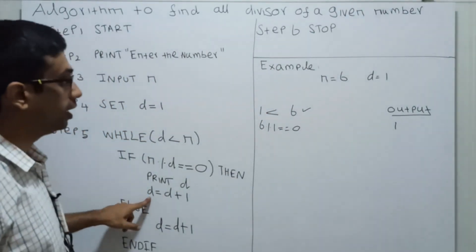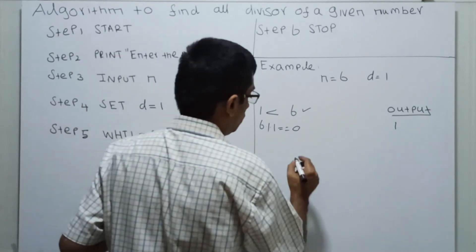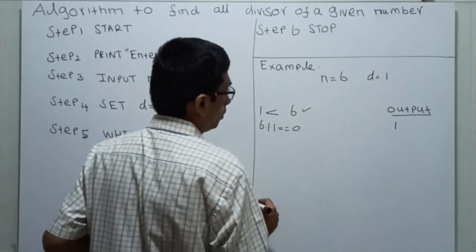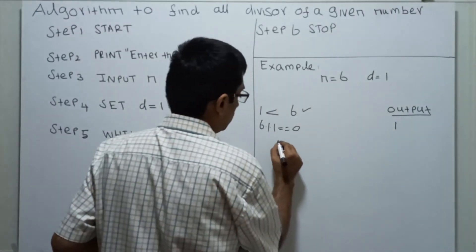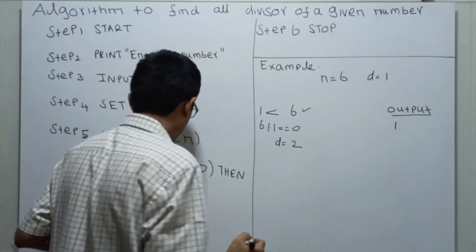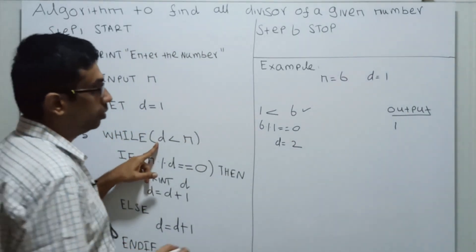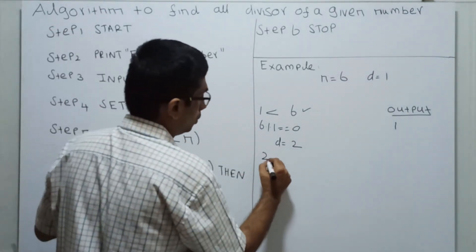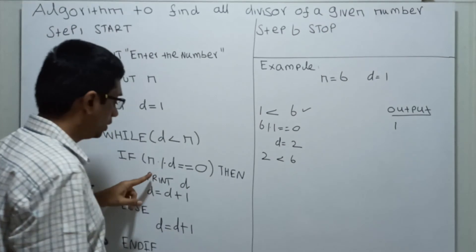D is now 2. Now we will check: is 2 less than 6? The condition is true. It will check.